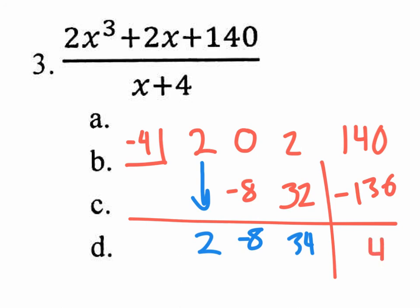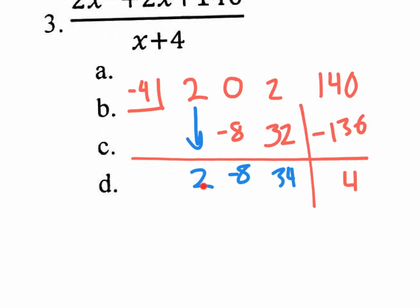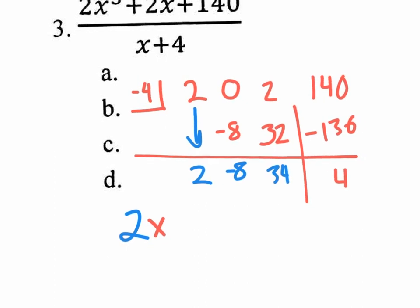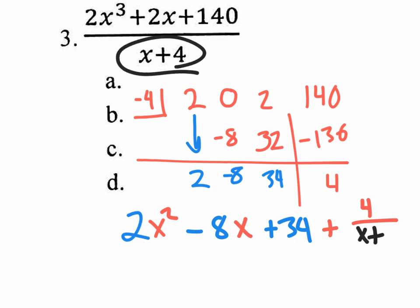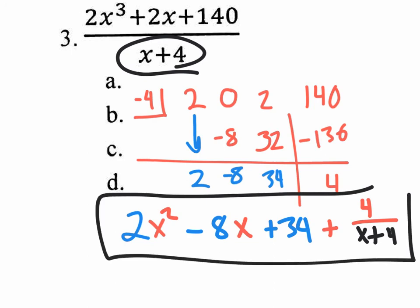Our answer: take the numbers along the bottom — these are the coefficients — and the remainder goes over the original divisor. So it's 2x squared minus 8x plus 34, plus four over x plus four. That's your final answer, including this fraction plus four over x plus four at the very end.